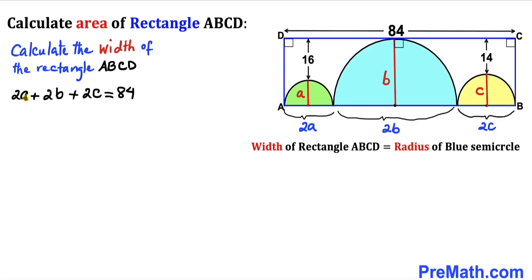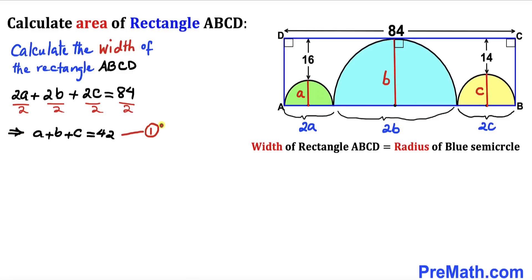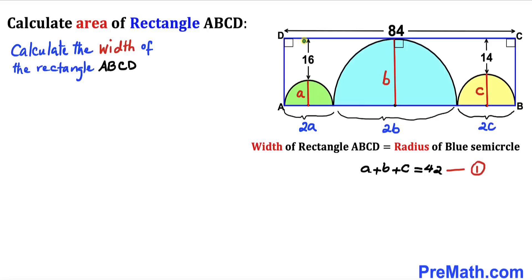This equation is divisible by 2 across the board. Dividing each term by 2 gives us a plus b plus c equals 42 — let's call this equation 1. Now let's focus on this vertical distance: a plus 16 is going to equal the radius of the blue semicircle, b.